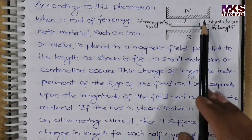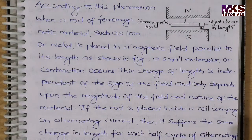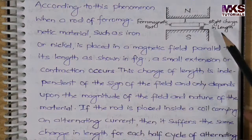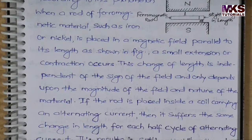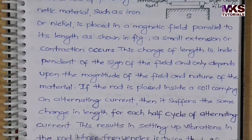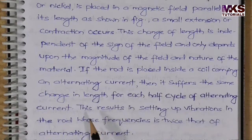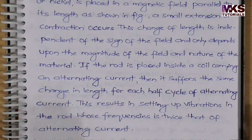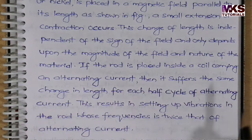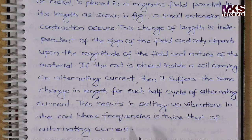It depends on the magnitude of the magnetic field and the nature of the material. If the rod is placed inside a coil carrying an alternating current, it suffers the same change in length for each half cycle of the alternating current. This results in the setting up of vibrations in the rod whose frequency is twice that of the alternating current.